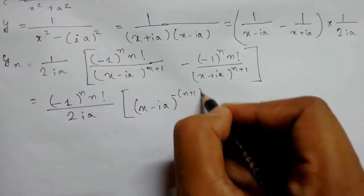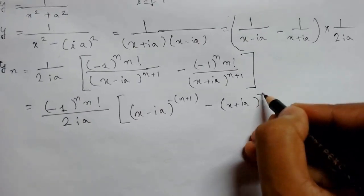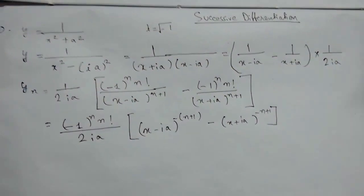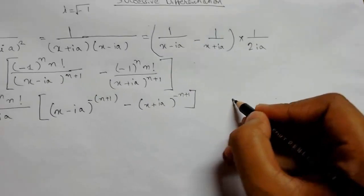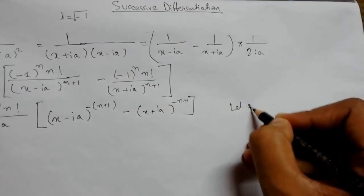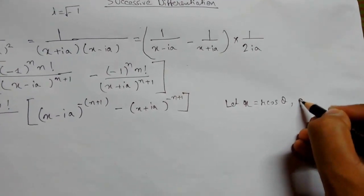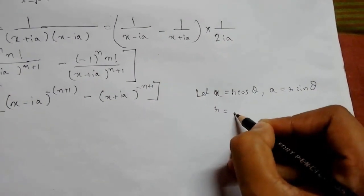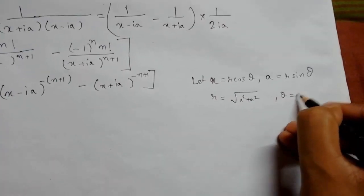We now introduce the substitution: let x = r·cosθ and a = r·sinθ, so that r equals the square root of x² + a², and θ equals tan inverse of a upon x. We proceed with this substitution.